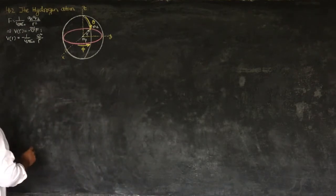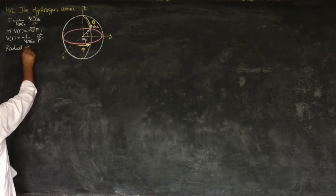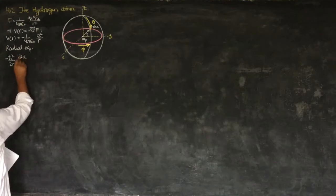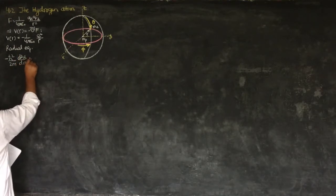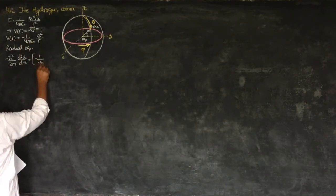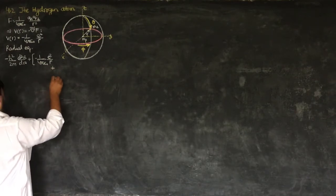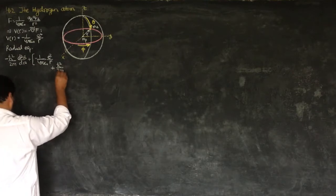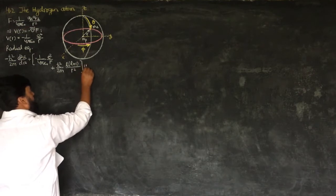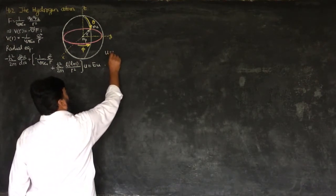We will now go to our radial equation. The radial equation is: minus ℏ² over 2m times d²u/dr² plus the effective potential, which is minus 1 over 4πε₀ times e² over r plus ℏ² over 2m times l(l+1) divided by r², equals E times u, keeping in mind that u equals r·R.